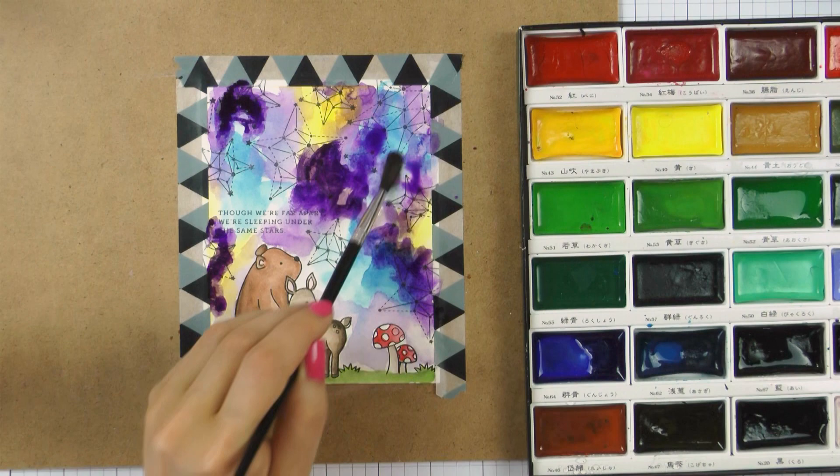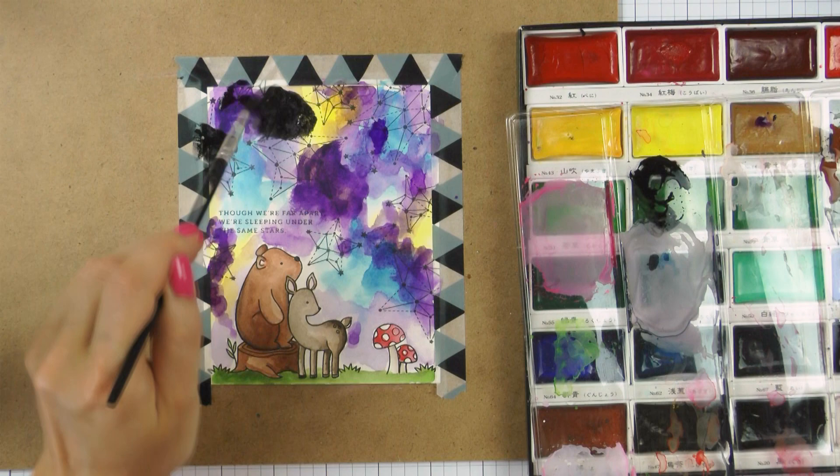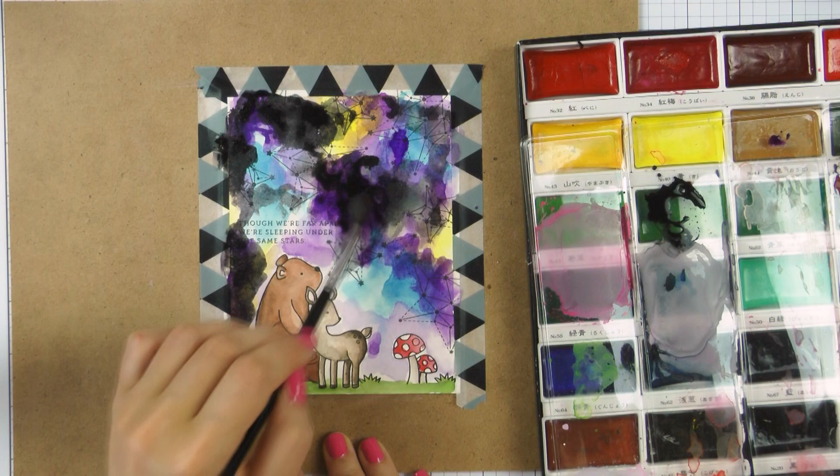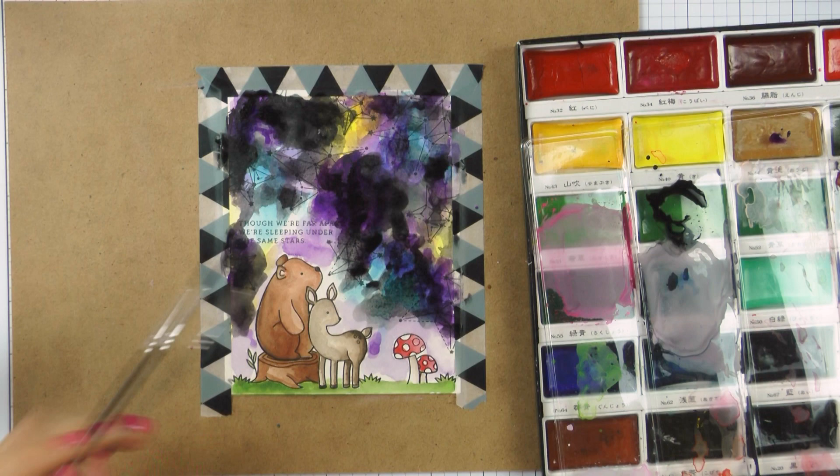Finally I'm going to start adding black here and I'm using my brush and adding black cloud looking blobs of pigment. I'm avoiding adding too much next to my critters and also next to the sentiment. The background does look pretty bad at this point and I'm going to be honest with you, I hated it. But I kept going.